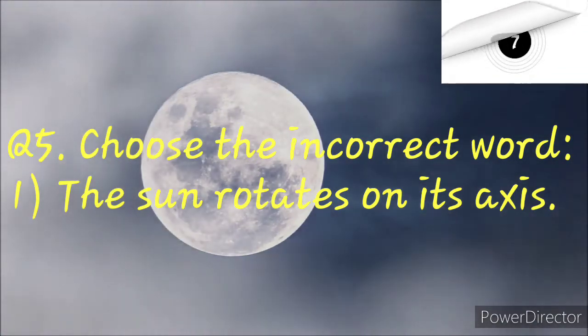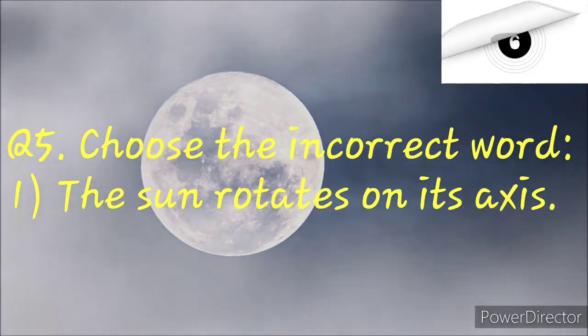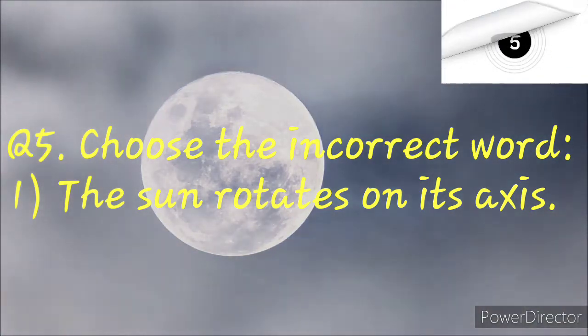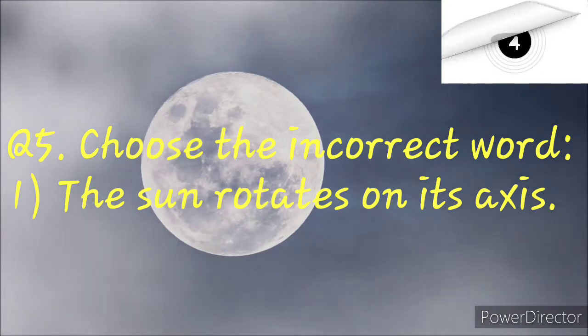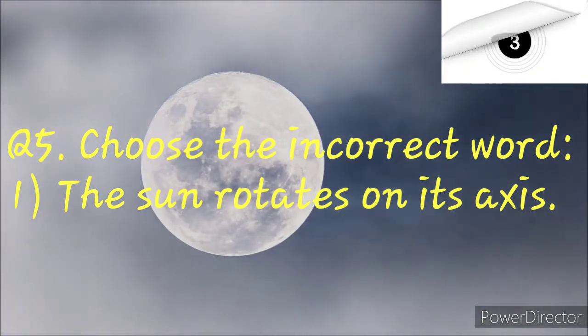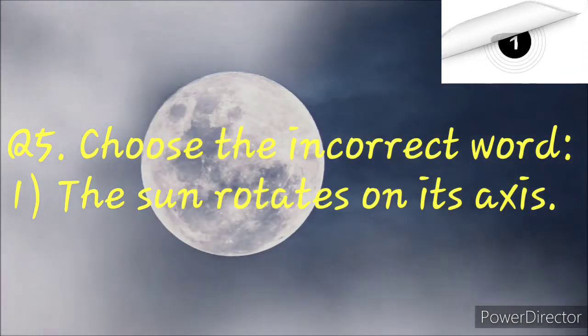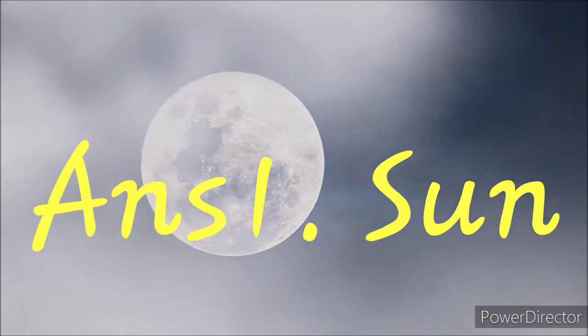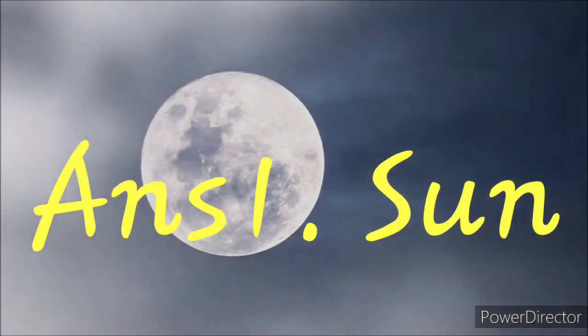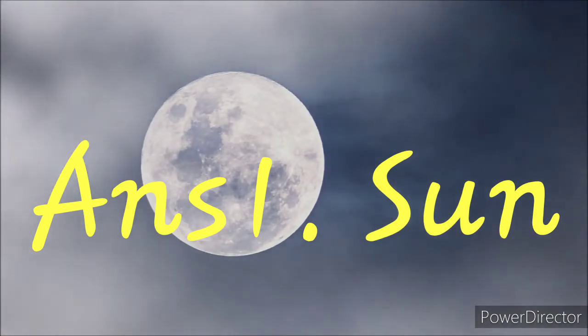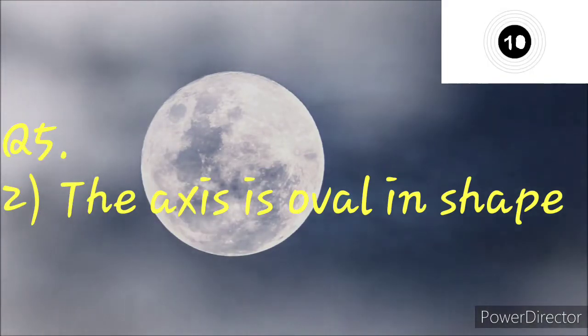Choose the incorrect word: 'The sun rotates on its axis.' The incorrect word is sun — the correct word is Earth.